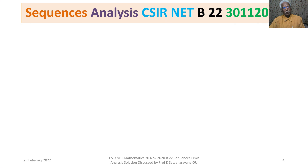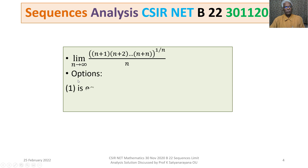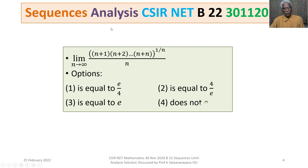The problem is: limit as n tends to infinity of the quotient whose numerator is (n+1)(n+2)···(n+n) whole to the power 1/n, divided by n. The four options are: Option 1 is e/4, Option 2 is 4/e, Option 3 is e, and Option 4 is that the limit does not exist.